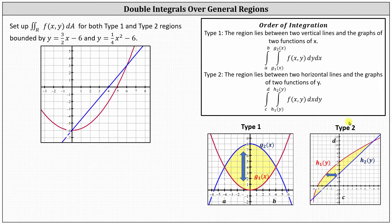Looking at the graph for type 2, because we integrate with respect to x first and then y, we integrate horizontally first and then vertically. Notice horizontally, the region is bounded by two functions of y, and vertically by y equals c and y equals d.